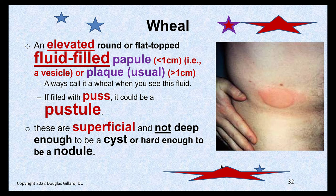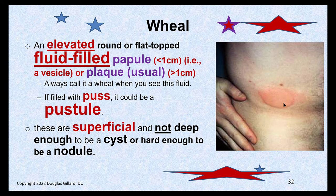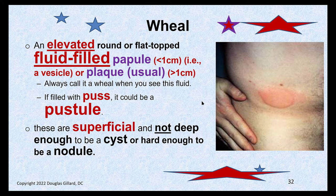Let's finish up with a wheal. A wheal is a raised lesion. Typically once it gets going, it gets bigger than one centimeter. Why isn't that a plaque? Because it's so superficial and it's filled with fluid. It's well-defined, so it still kind of looks like a plaque — but plaques are not fluid-filled. So it's essentially an elevated, fluid-filled papule or plaque, but it's still called a wheal. If you see the fluid, don't call it a plaque — it's a wheal. If it's filled with pus, green or yellow looking, it's called a pustule, no matter what size.